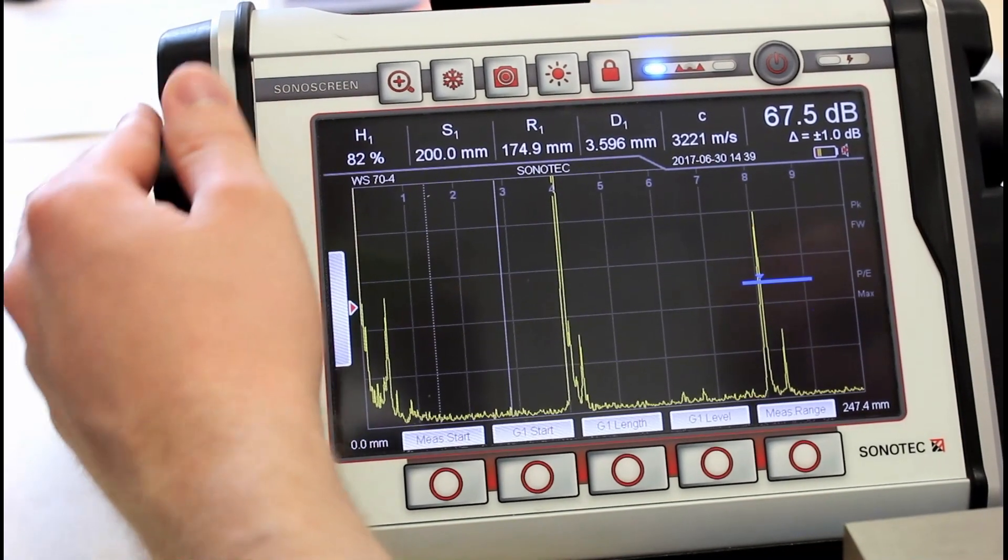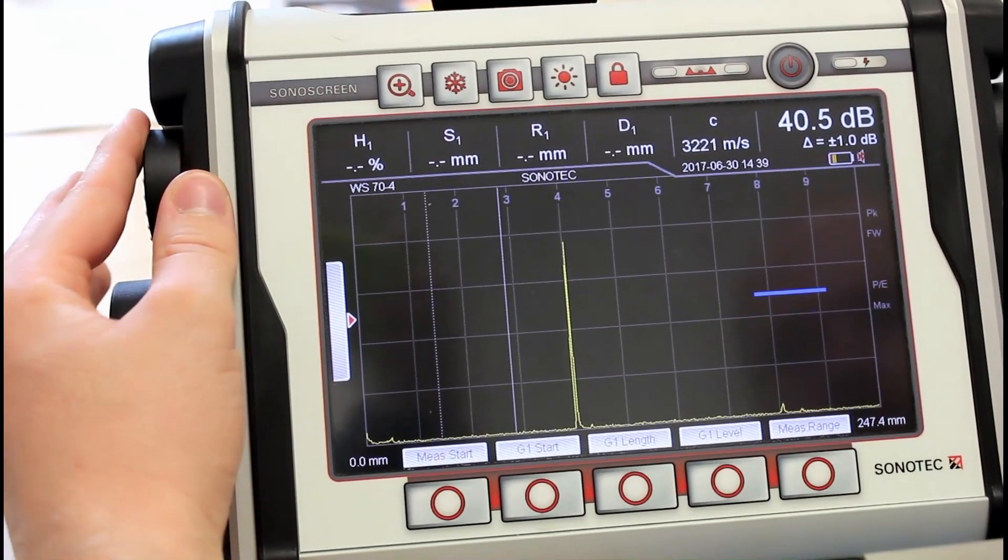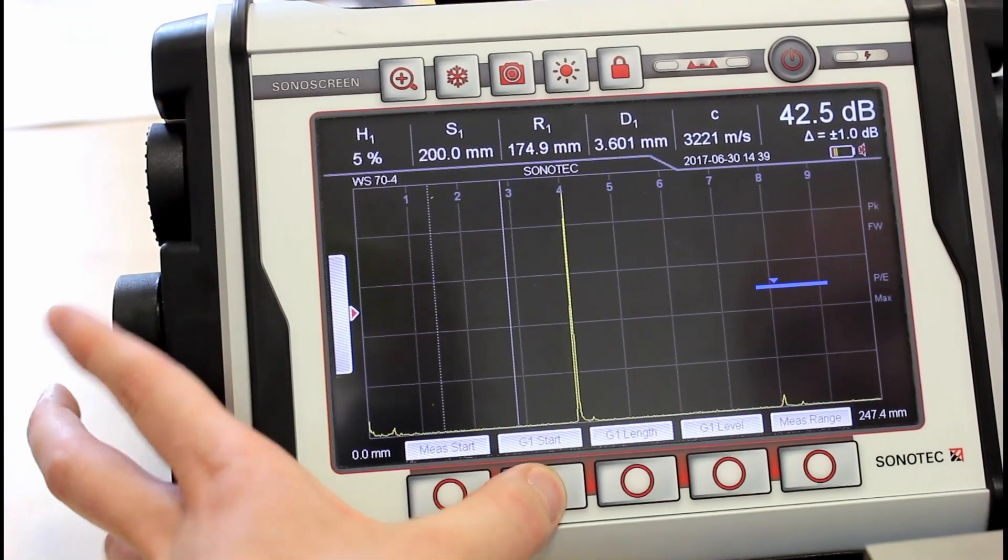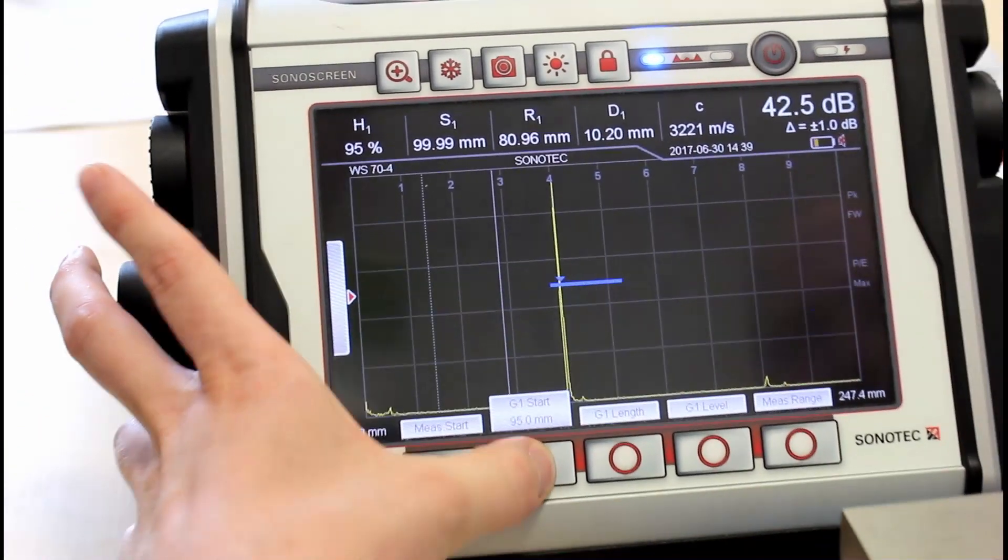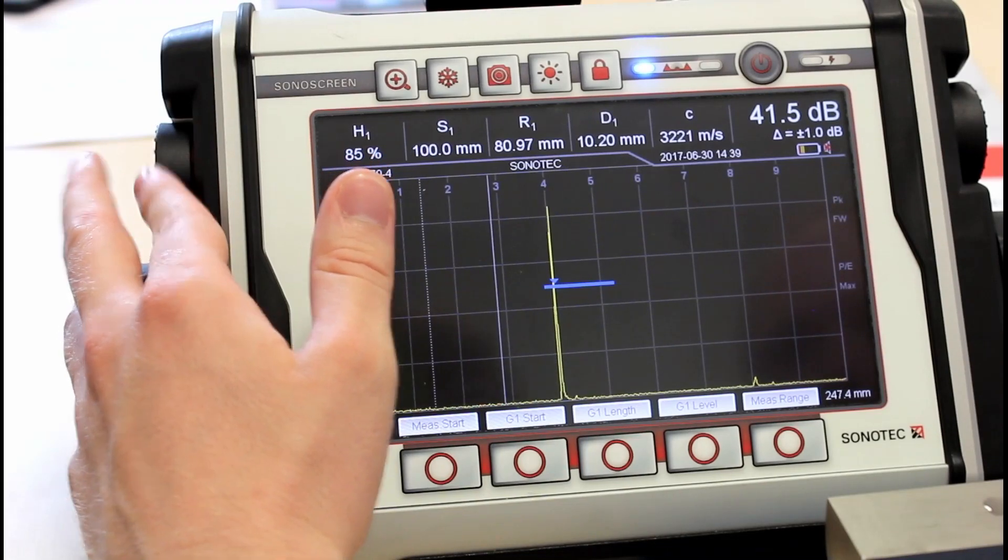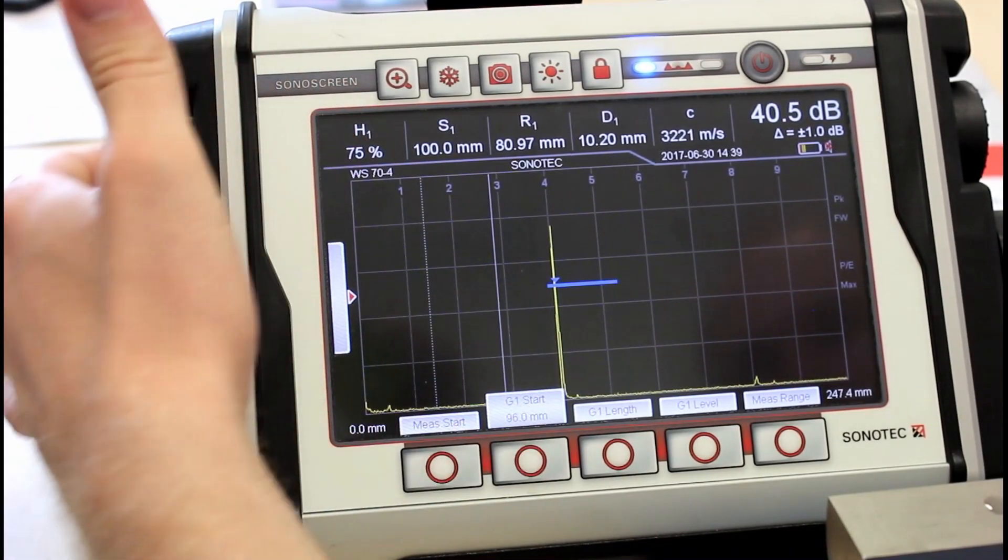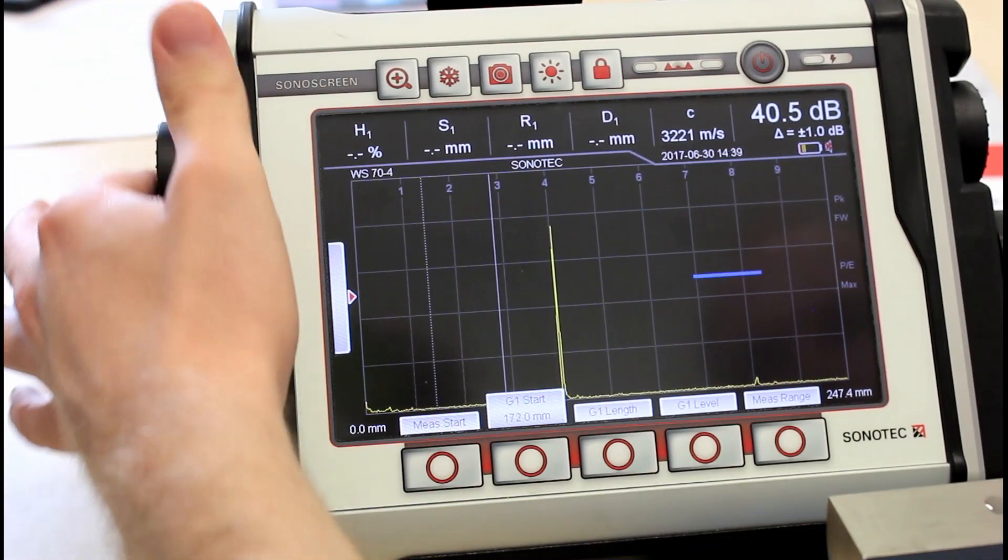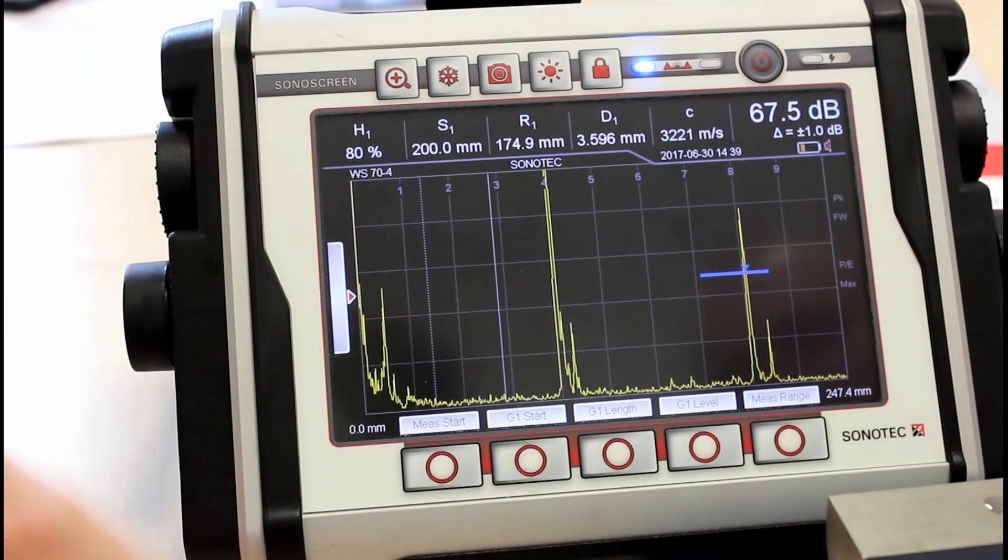Now we can check if the calibration was performed correctly by simply moving the gate back to the first echo. And our sound path should be one hundred millimeters, which it is. The second echo should show two hundred millimeters. And it does. Okay.